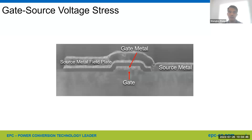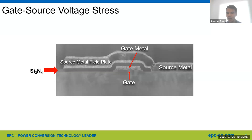Gate bias. Let's look at our gate structure in this TEM cross-section image, where we can see the source metal, gate metal, source field plate, and the gate. You may notice a dark layer between the source metal field plate and the gate — this is a silicon nitride dielectric layer. Please keep this cross-section in mind, because we will come back to this image when discussing the gate failure mechanism.